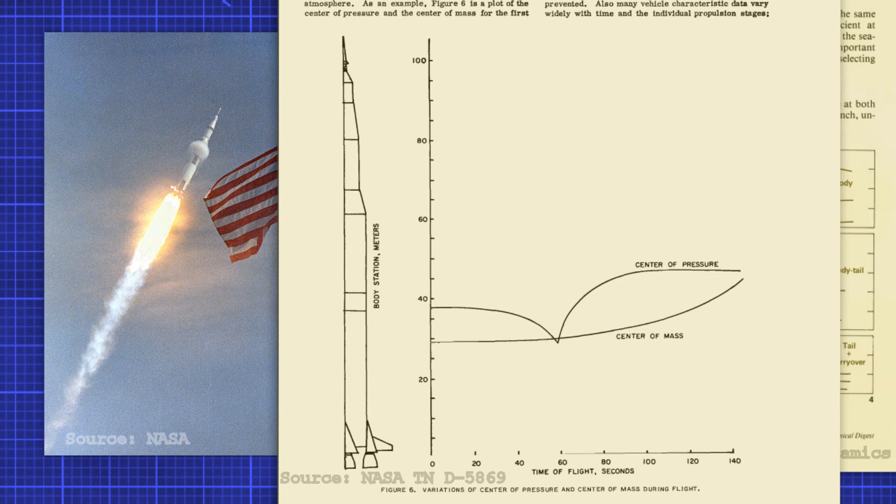As you can see, the center of mass steadily moves forward as the fuel in the first stage is being consumed, while the center of pressure suddenly jumps at about 60 seconds into the flight. The jump in center of pressure interestingly happens at the same time the Saturn V broke the sound barrier.